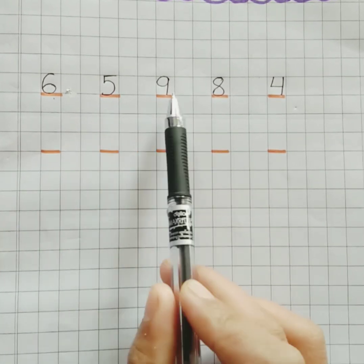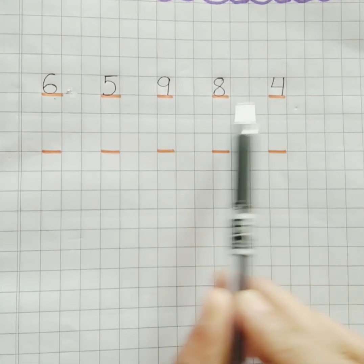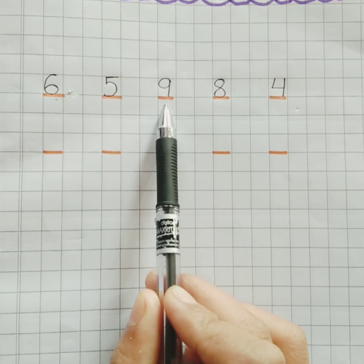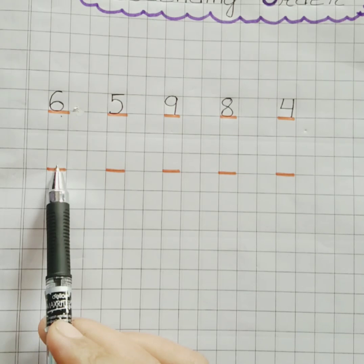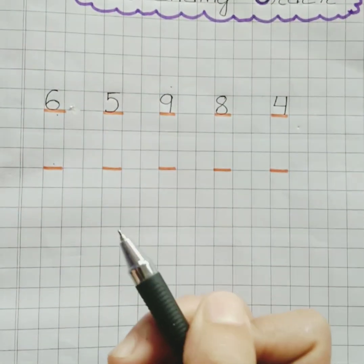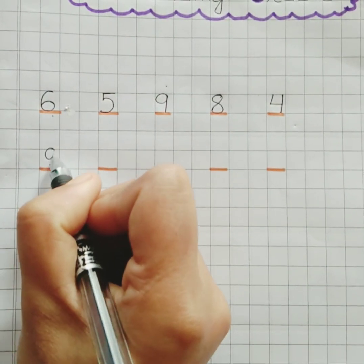6, 5, 9, 8, 4. Yes, 9 is the biggest. So we'll write 9 at first here. 9 is the biggest number.